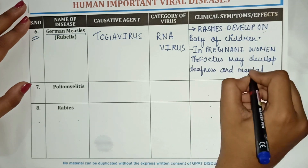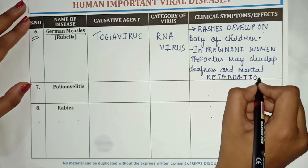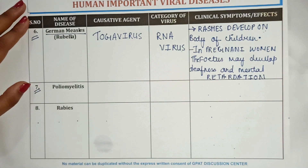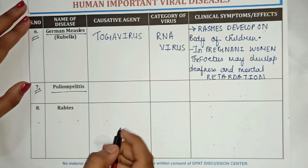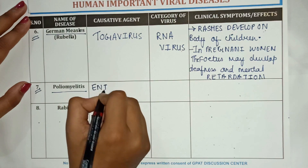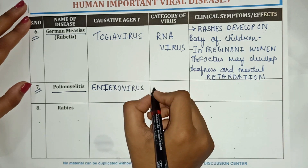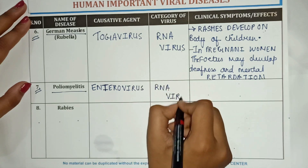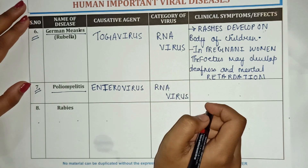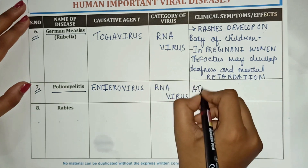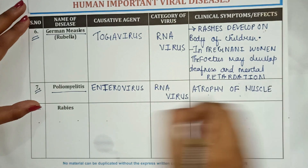The next disease is poliomyelitis. The causative agent for this disease is enterovirus, and the category of virus is RNA virus. The clinical symptoms and effects related to this disease include atrophy of muscles.